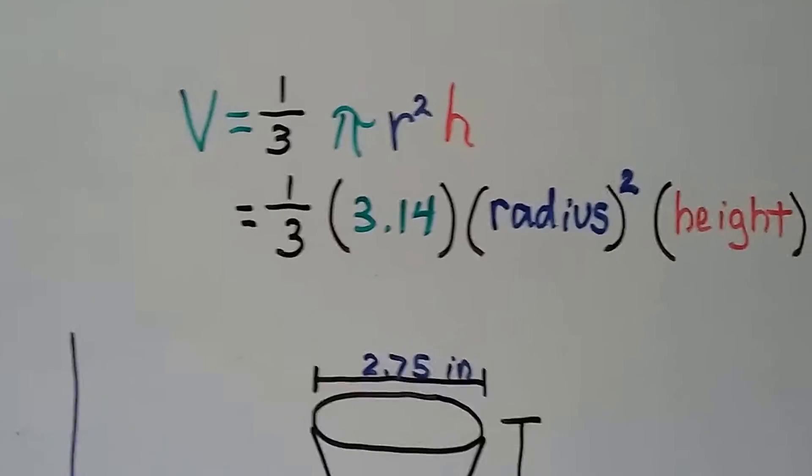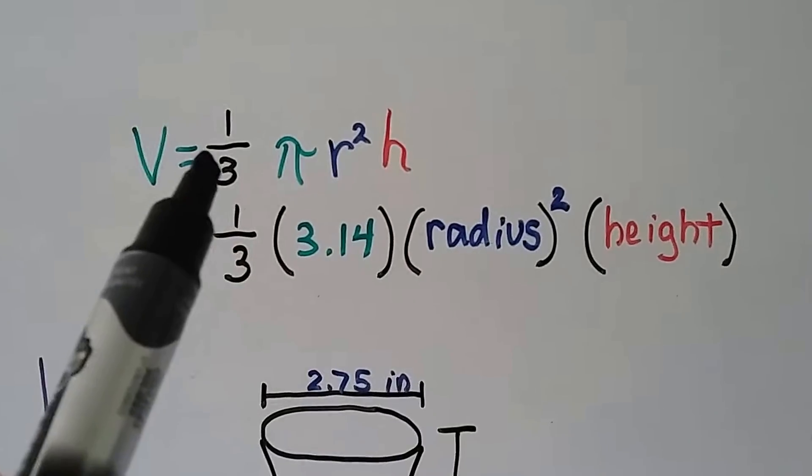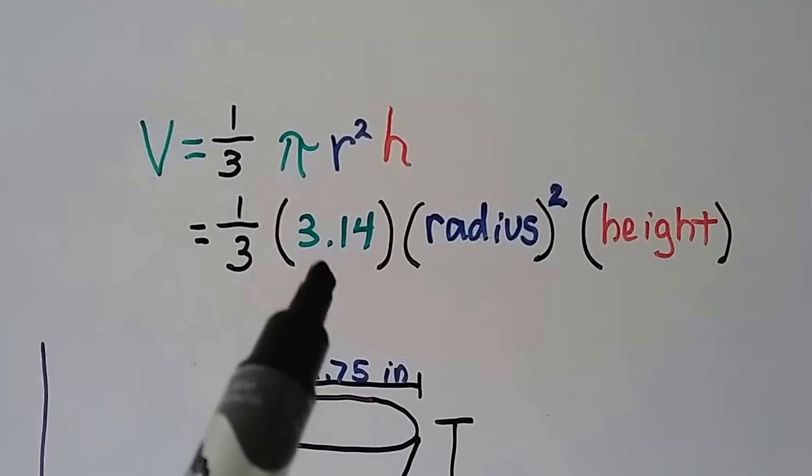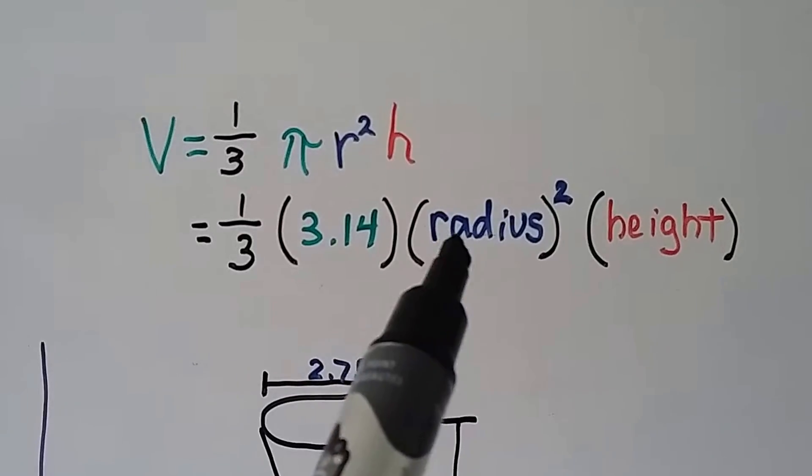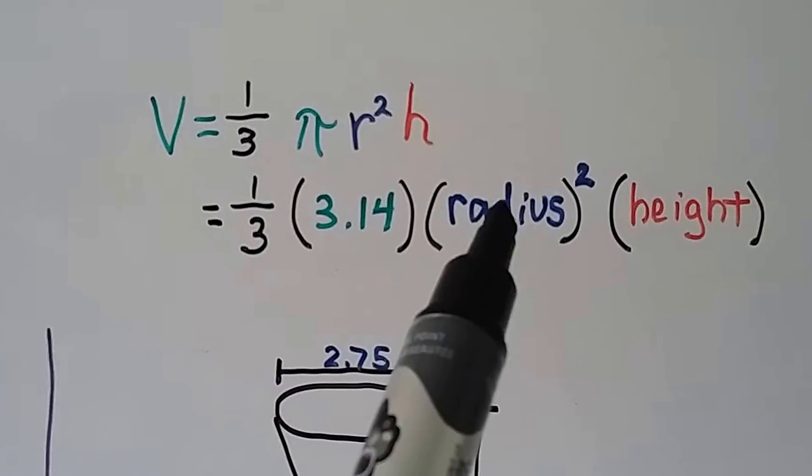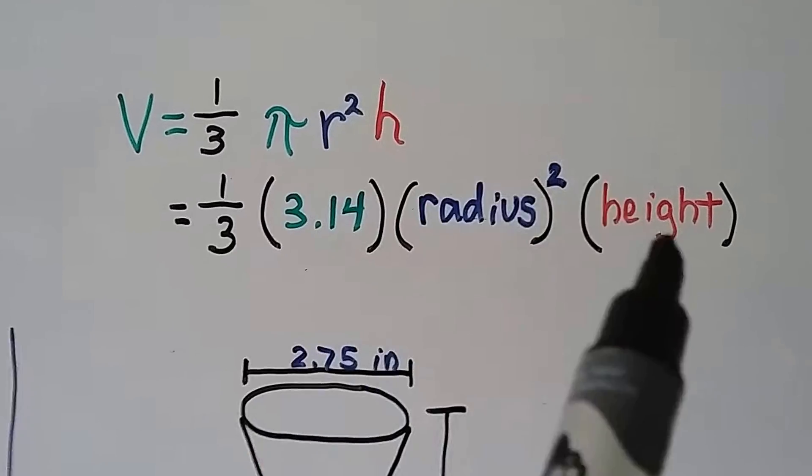Now let's take a look at this formula. It's telling us that it wants us to multiply one-third times pi, which will be 3.14, times the radius squared, which means radius times radius, and then we need to multiply that to the height.